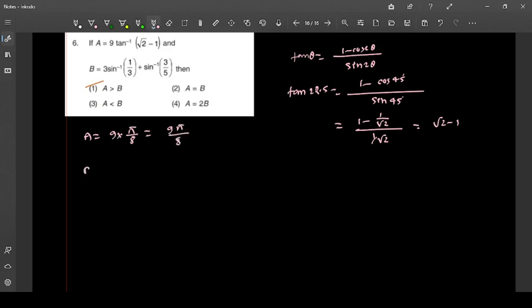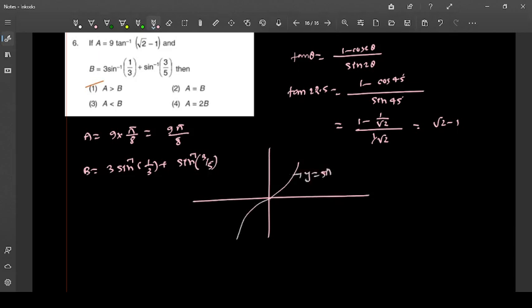Moving forward, B is 3 sin inverse 1 by 3 plus sin inverse 3 by 5. If you observe carefully, sin inverse x is an increasing function. Since 1 by 2 is greater than 1 by 3, that's pretty obvious, then sin inverse 1 by 2 is greater than sin inverse 1 by 3.